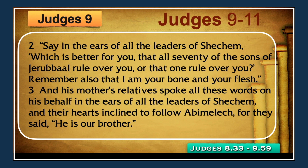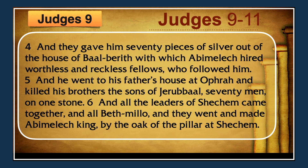That old expression 'Bob's your uncle' — that's where it comes from, putting your relative in power. In verse 4, they gave him 70 pieces of silver out of the house of Baal-Berith, with which Abimelech hired worthless and reckless fellows who followed him. He went to his father's house at Ophrah and killed his brothers, the sons of Jerubbaal, 70 men on one stone. And all the leaders of Shechem and Beth-Milo came together and made Abimelech king by the oak of the pillar at Shechem.